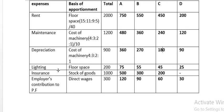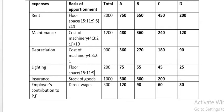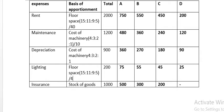Lighting is apportioned on the basis of floor space (area occupied). We already have the ratio 15:11:9:5 with a total of 40. The total lighting expense of 200 is distributed to all four departments, giving: 75, 55, 45, and 25.